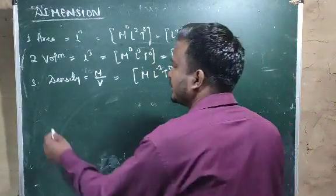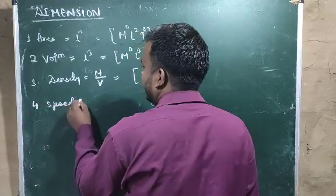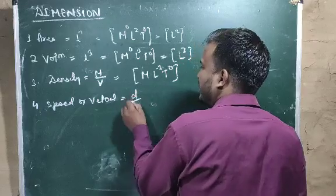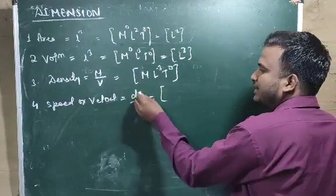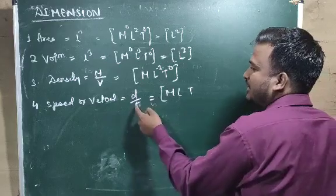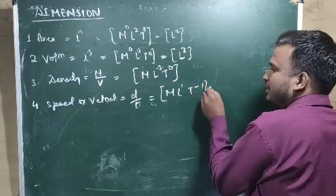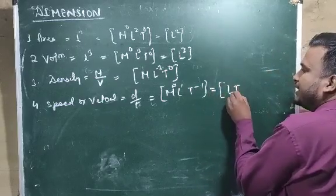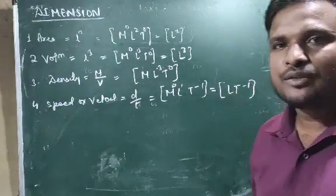Number 4 is speed or velocity. Speed or velocity equals distance divided by time. Expressing in terms of the dimensional formula: distance is L, time is T. When T goes to the denominator, it becomes T⁻¹, and M will be 0. So the result is L T⁻¹, which is the dimensional formula for speed.